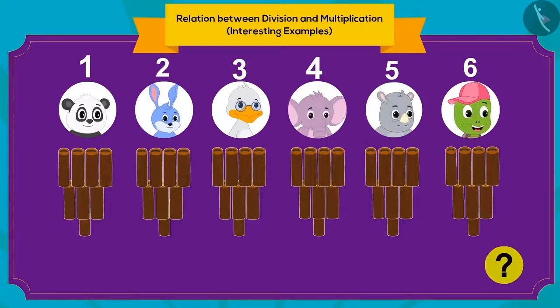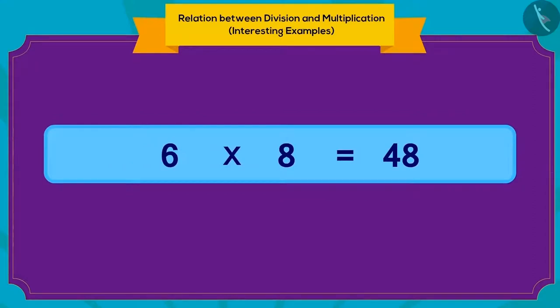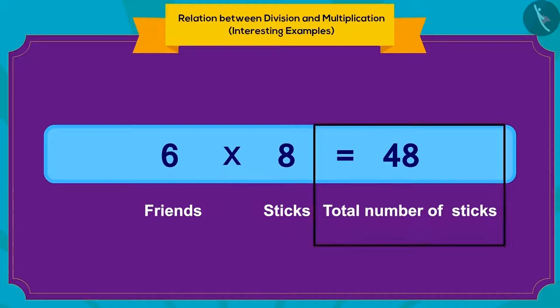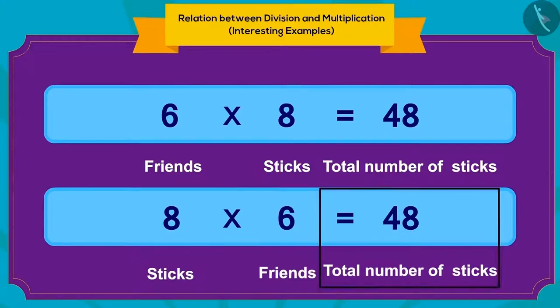How can we write this in the form of multiplication? Absolutely correct. We can write it in terms of multiplication like this. If there are six friends and each friend is given eight sticks, then total number of sticks will be 48. Or, if each friend is given eight sticks and the number of friends is six, then the total number of sticks will be 48.